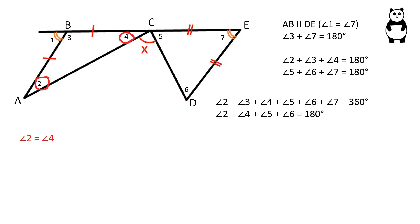Angle 2 is equal to angle 4 because triangle ABC is an isosceles triangle. Angle 5 is equal to angle 6 because triangle CED is also an isosceles triangle.